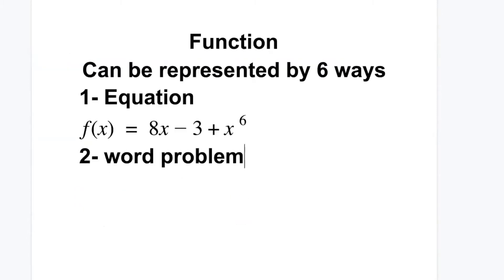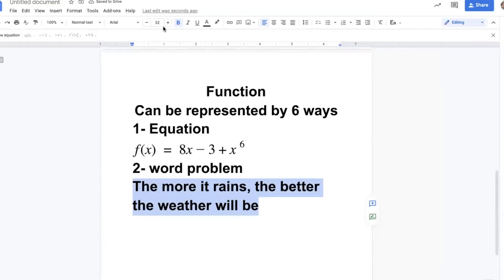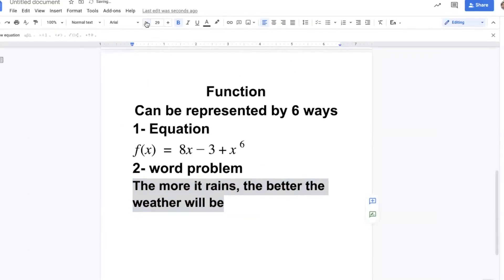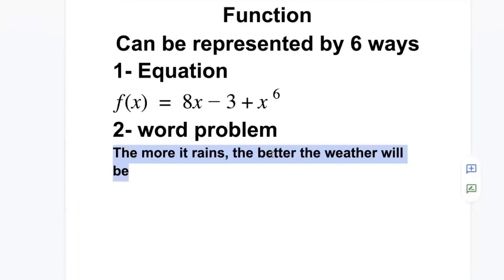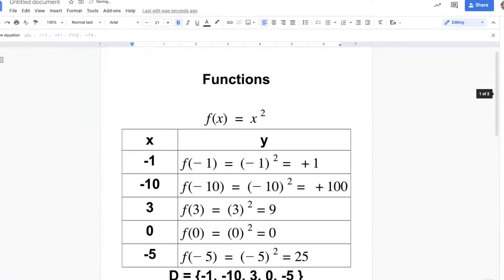The second one is word problem. For example, the more it rains, the better the weather will be. Rain is x, the independent variable, and weather is y, the dependent variable. The third one is tables, like this table.